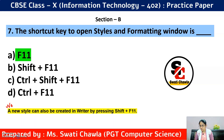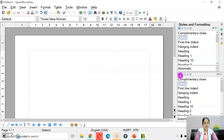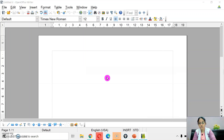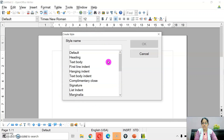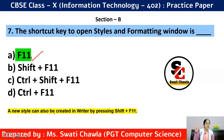An important note: a new style can also be created in Writer by pressing Shift + F11. If you want to create a custom style, pressing Shift + F11 opens the dialog box to create a new style directly. So if the question asks about opening Styles and Formatting, the answer is F11; but if it asks about creating a new or customized style, the answer is Shift + F11.